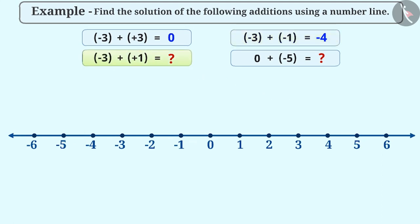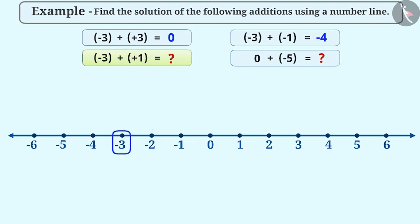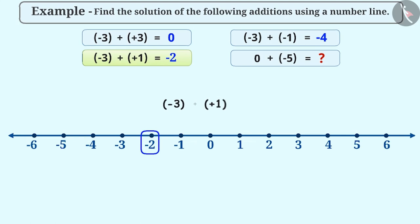For addition of minus 3 and plus 1, we first move 3 steps to the left of 0, and since plus 1 is a positive integer, then we move 1 step to the right and reach minus 2. This is the result of minus 3 plus plus 1. When we add plus 1 to a number, or move 1 step to the right, then we get the successor of that number.